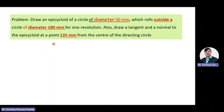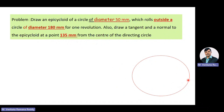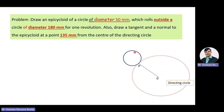We will read the problem once again. The given problem is: draw an epicycloid of a circle of diameter 50 mm which rolls outside a circle of diameter 180 mm for one revolution. Also draw a tangent and a normal to the epicycloid at a point 135 mm from the center of the directing circle. This is the directing circle with diameter 180 mm and center O. This is the rolling circle with diameter 50 mm. Point P on the circumference of the rolling circle moves to P dash as the rolling circle rolls outside the directing circle for one complete revolution.